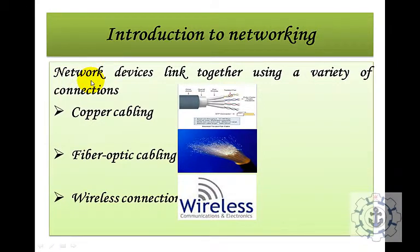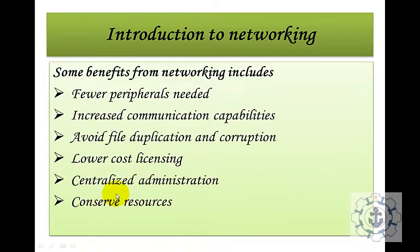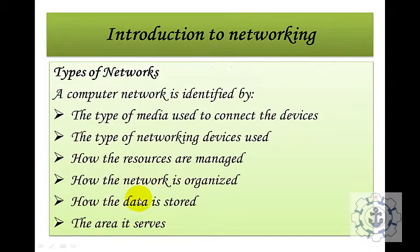How to link the network devices is the next problem. Network devices are linked together using varieties of connections — for example, copper cabling, fiber optic cabling, or wireless connections. Some benefits of networking include fewer peripheral needs, increased communication capabilities, avoidance of file duplication and corruption, low-cost licensing, centralized administration, and conservation of resources.